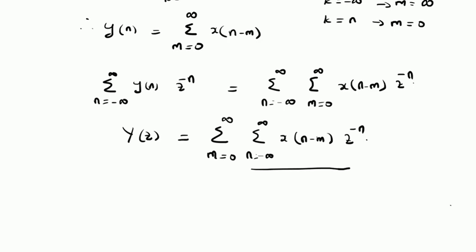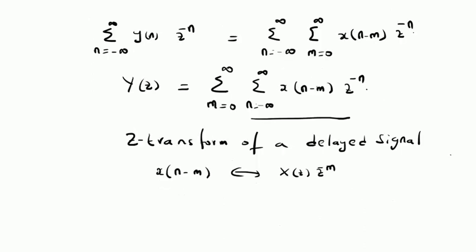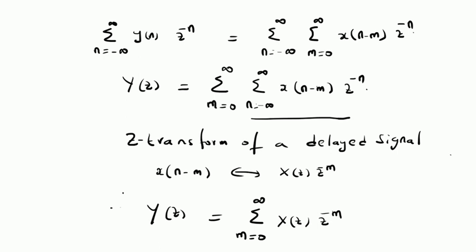By using the definition of the Z-transform of a delayed or shifted signal, which states that x of n minus m has the Z-transform X of z multiplied by z power minus m, this summation becomes X of z times z power minus m. Therefore, the Z-transform of the output Y of z is equal to summation m equal to 0 to infinity of X of z multiplied by z power minus m.